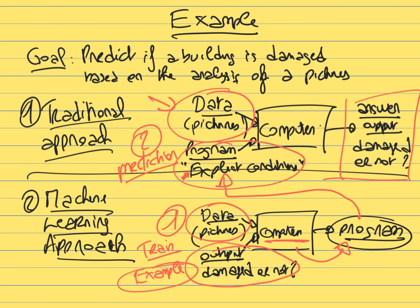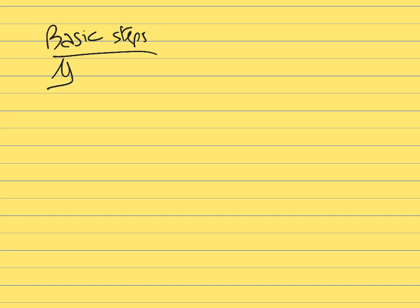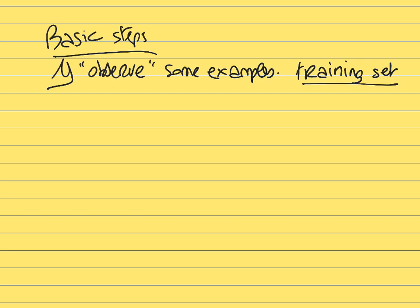That's the machine learning approach: provide examples and let the computer come up with the program on its own. When building a machine learning model, there are three basic steps. First, the computer must observe some examples — these are provided as a training set.